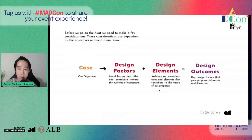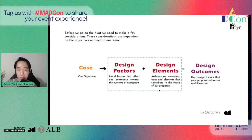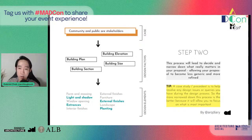If you recall from session one, what Bianca from Art Diary did was to highlight a case study process to decide the design factors, the design elements, and the design outcomes. These three aspects will come in handy today as I explain several design factors, elements, and outcomes that can be related to building regulations and the technical side of things. From the previous session, we went through design factors such as the building plan, section, elevation, building cubicle extent, height, and area. And we also covered design elements such as form and massing, lighting, light and shadow, and so on.